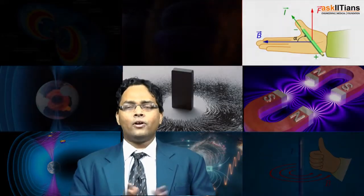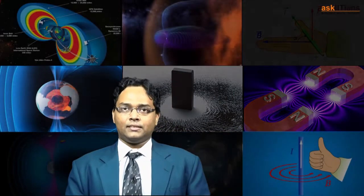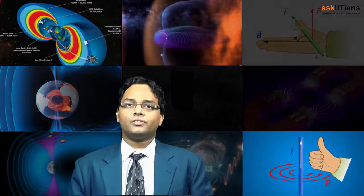We have already been discussing quite a few chapters from the class 12 syllabus. Now here is another one — this is moving charges and magnetism. We see magnets everywhere; they actually exist all around us. So let's try to understand more about magnetism.